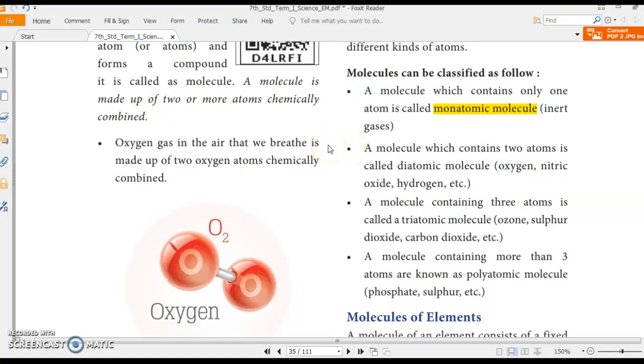A molecule which contains two atoms is called diatomic molecules. For example, oxygen, nitric oxide, hydrogen, etc. So these all contain two atoms. Okay. Oxygen contains only two atoms of oxygen. Nitric oxide contains one atom of nitrogen and one atom of oxygen. Hydrogen contains two atoms of hydrogen.